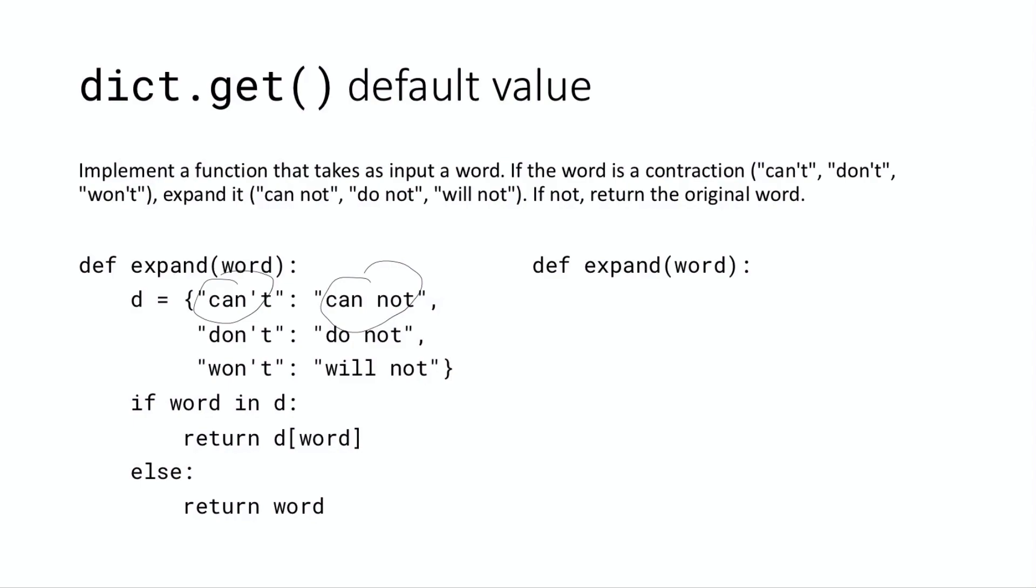All right. And so basically we have this condition if word in d - d is the name of our dictionary. So we say if this is one of these three words, if it is can't, don't, or won't, then we want to return the corresponding value for that. So if it's can't, we want to return cannot, and so on and so forth.